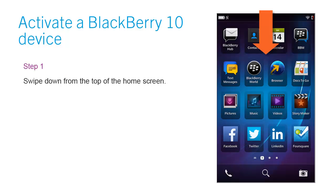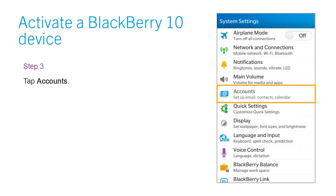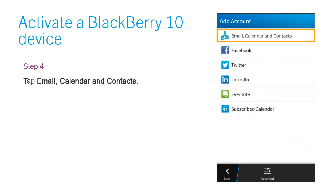Step 1: Swipe down from the top of the home screen. Step 2: Tap Settings. Step 3: Tap Accounts. Step 4: Tap Email, Calendar, and Contacts.